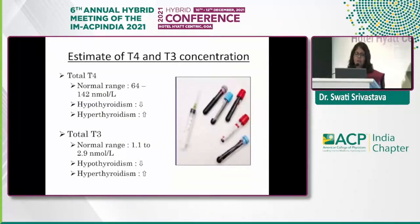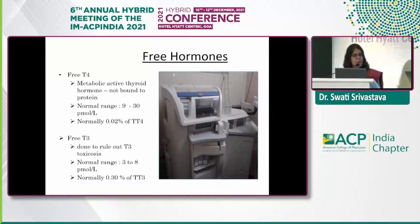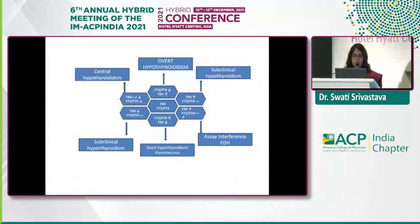For T4 and T3 concentrations, we need to evaluate the free hormones. Thyroid hormone has very significant protein binding — the major part is bound. The binding proteins include thyroid-binding globulin, transthyretin, and albumin. If there are changes in these binding proteins, this leads to changes in total thyroid hormone levels. In such conditions, evaluating free hormones becomes more important. There are many permutation combinations where thyroid hormone and TSH levels are altered.